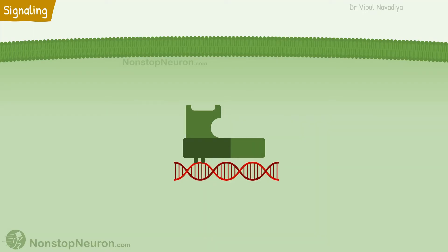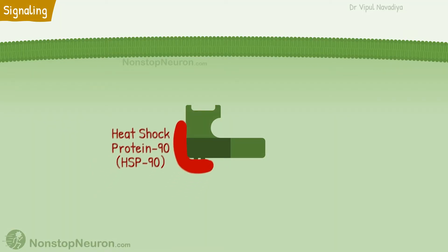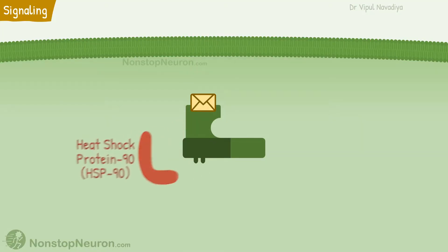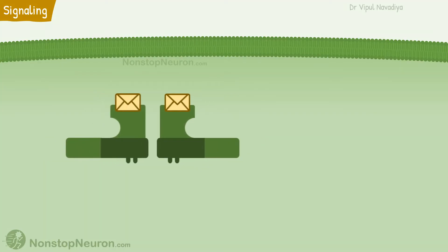Now these receptors are inherently capable of binding with the respective genes. But under the resting state, their activity is prevented by a chaperone protein like heat shock protein 90. The binding of a ligand with the ligand binding domain causes a release of HSP-90. Now two of such receptors dimerize and get activated.